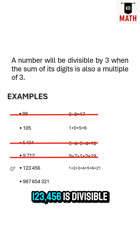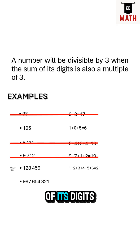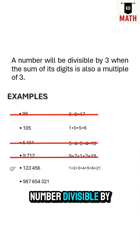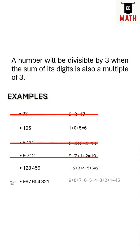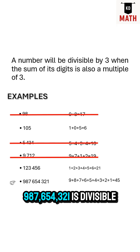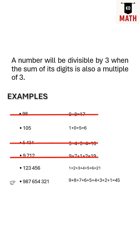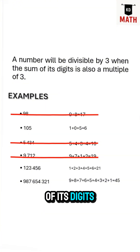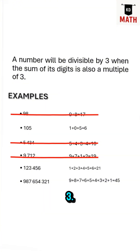123,456 is divisible by 3 because the sum of its digits results in a number divisible by 3. 987,654,321 is divisible by 3 because the sum of its digits results in a number divisible by 3.